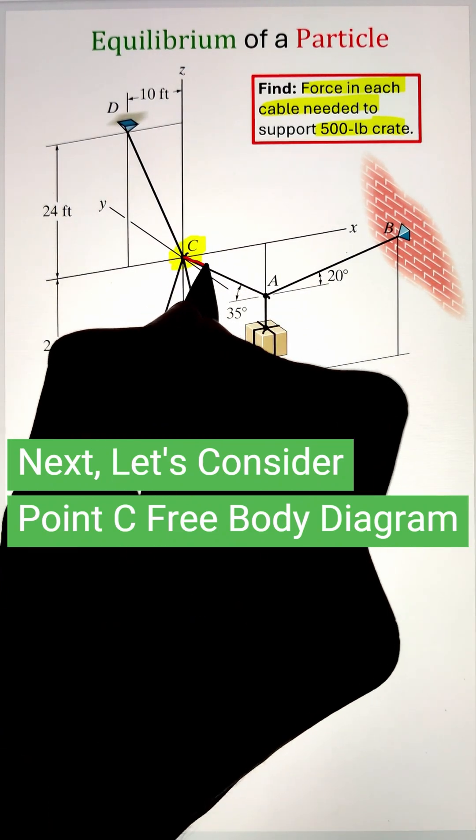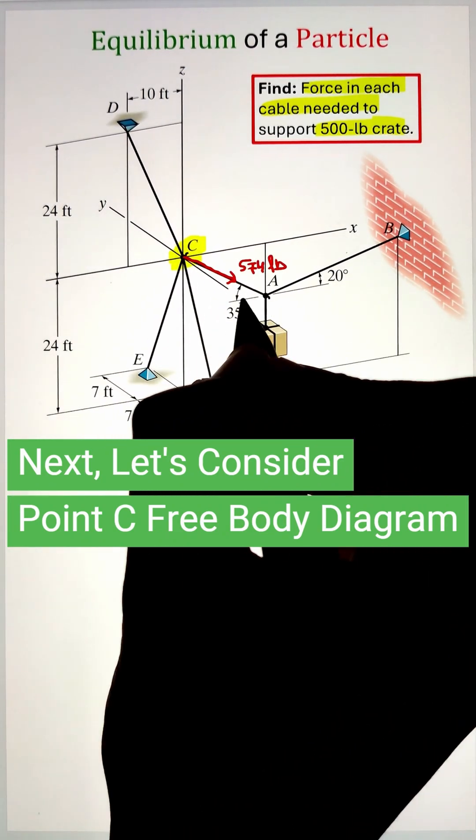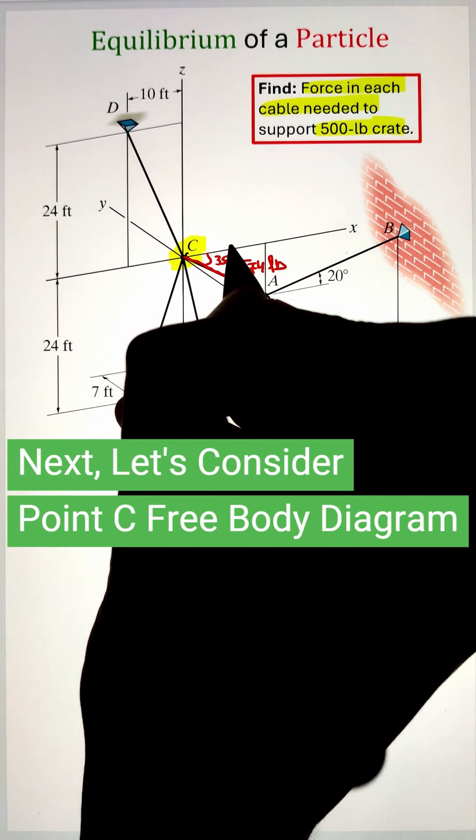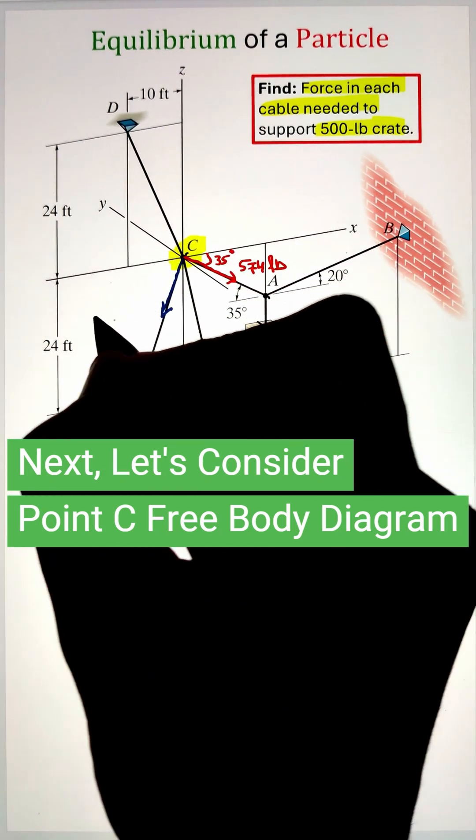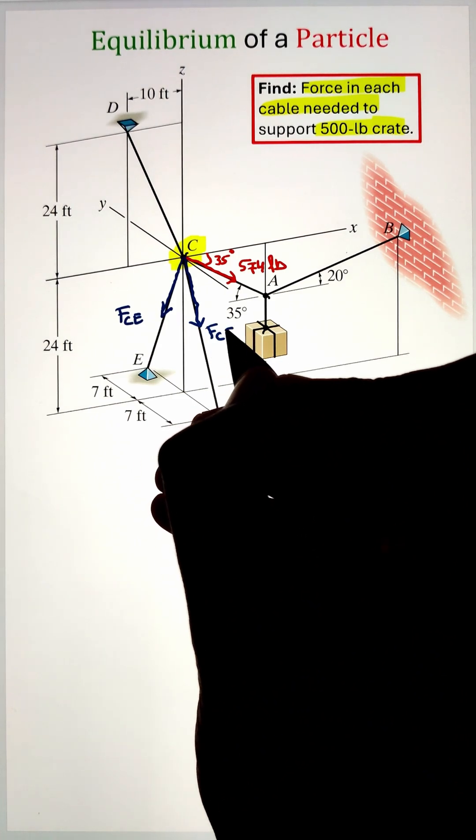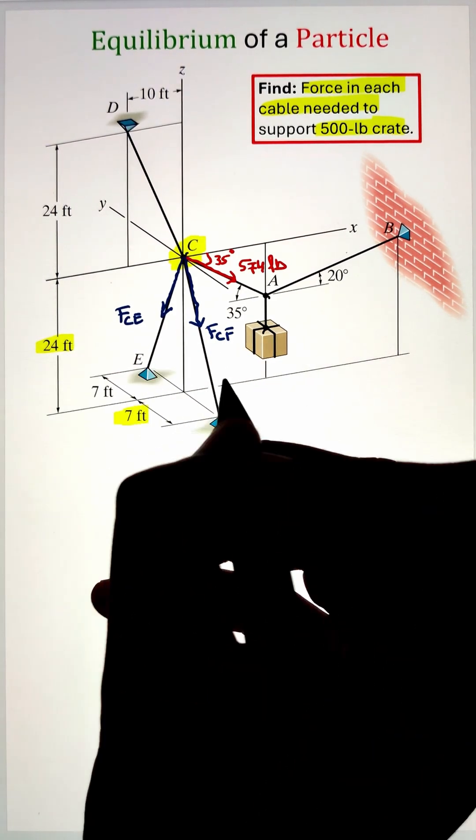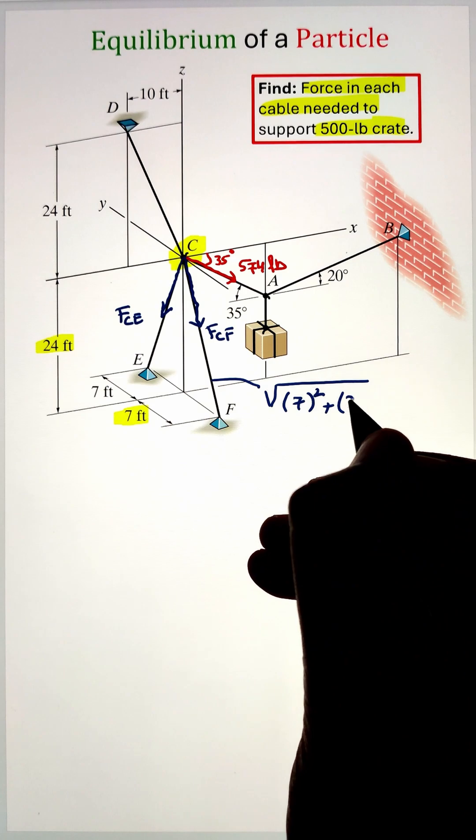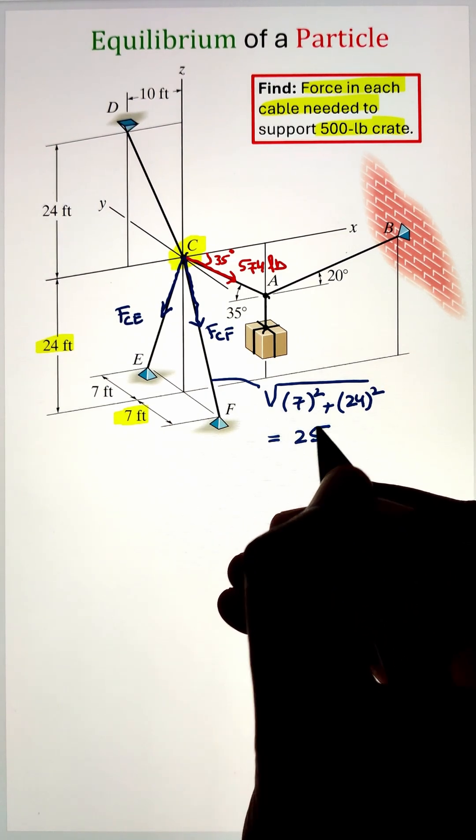The other two cables that are acting downward from C to E and C to F, their length can be calculated using the Pythagorean theorem, which is coming as 25 feet. Similarly, we can calculate the length from C to D using the Pythagorean theorem as well, that is coming as 26 feet.